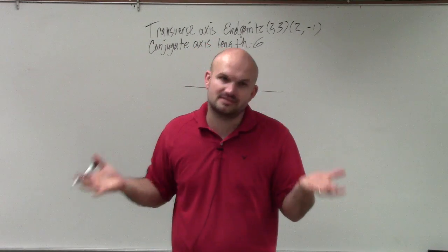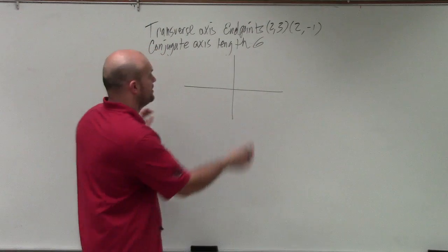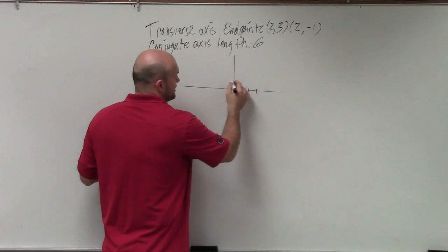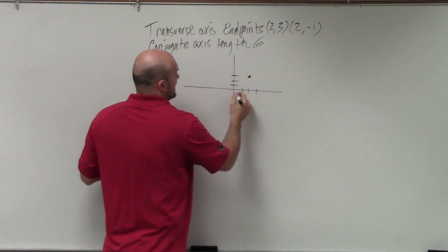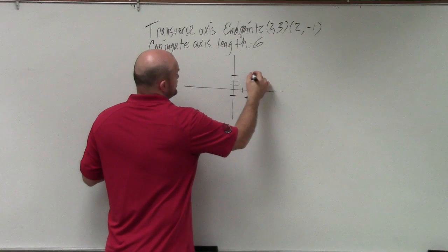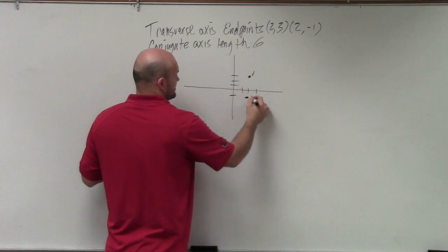But you guys are plotting points. This is not anything that's that difficult. So you have 2 comma 3: 1, 2, 3, or 2 up 3. And 2, negative 1. So those are the transverse axis endpoints.